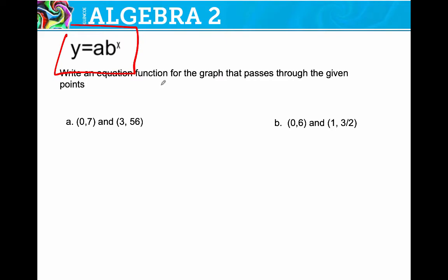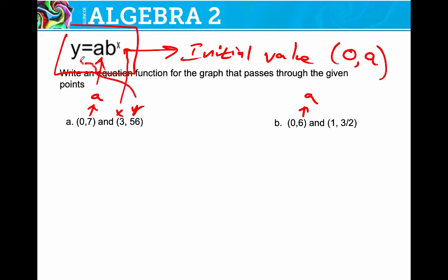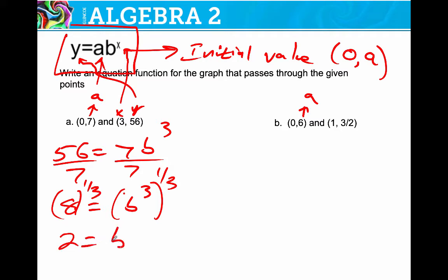Okay. Change of pace. y equals a times b to the x. Remember, the initial value for any of these, the initial value is always going to be at 0a. So this is a. This is a. And then this is another point, x, y. So I'm going to plug a in here, x in here, y in here. And we're going to solve 56 equals 7 times b to the 3rd. Divide by 7. 8 equals b to the 3rd. You can cube root both sides. Or you can recognize that this is 2 cubed. And b is going to be 2. But I prefer to raise to the power of 1 3rd. b is 2. But they want me to write the equation. So I've got to go back and go y equals 7 times 2 to the x. There's your answer.